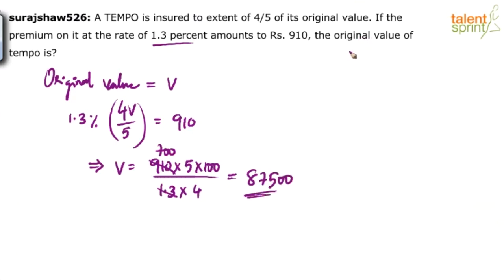Remember, the question was find the original value of the tempo. Original value is 87,500. What all of you have calculated is only the insured value. Suppose the question says, how much is the insured value?